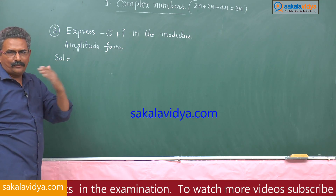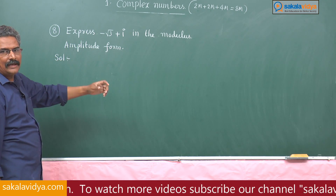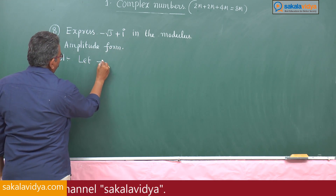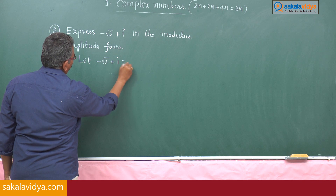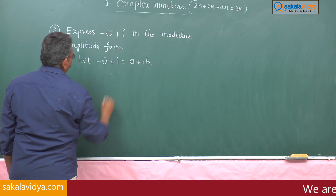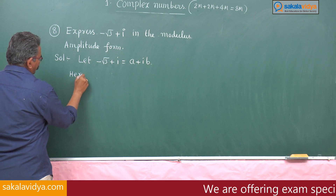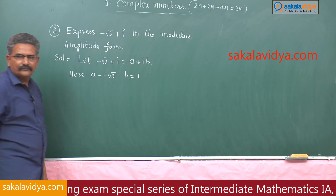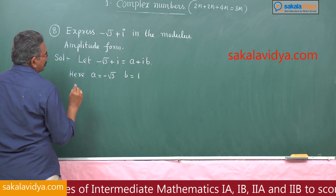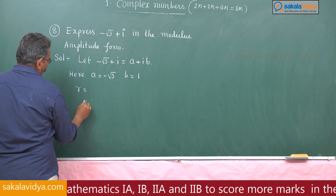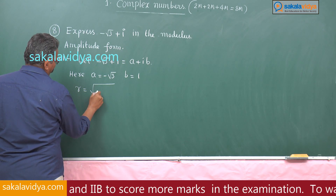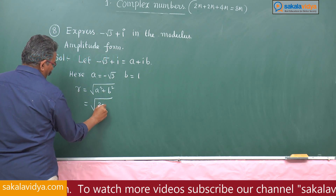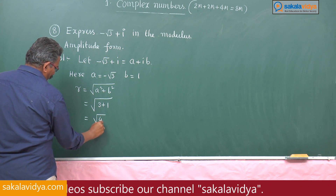We have already discussed the method in the seventh problem, so now let us go directly to the problem. Let minus root 3 plus i equal a plus ib, where a equals minus root 3 and b equals 1. Finding r: r equals root of a squared plus b squared, which is root of 3 plus 1, equals root of 4, which is 2.